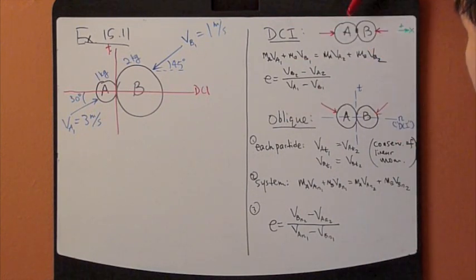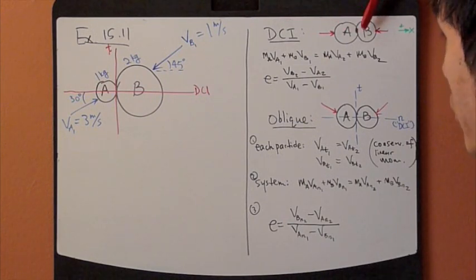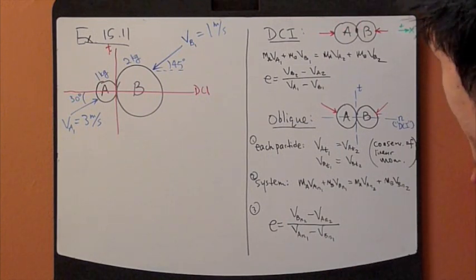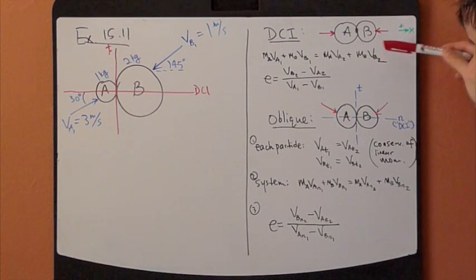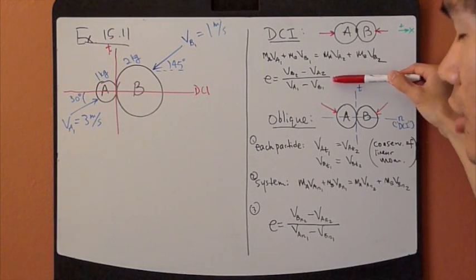For direct central impact, it looks like this. There are two equations: conservation of linear momentum and coefficient of restitution.